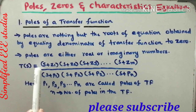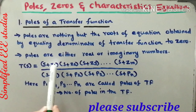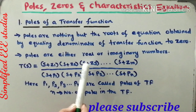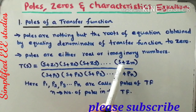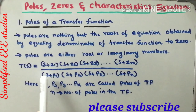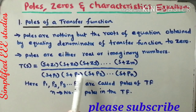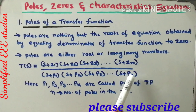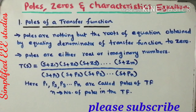Let us consider one general transfer function: T(s) equals (s + z1)(s + z2)(s + z3)... divided by (s + p1)(s + p2)(s + p3)...(s + pn). This is one of the general forms of a transfer function.